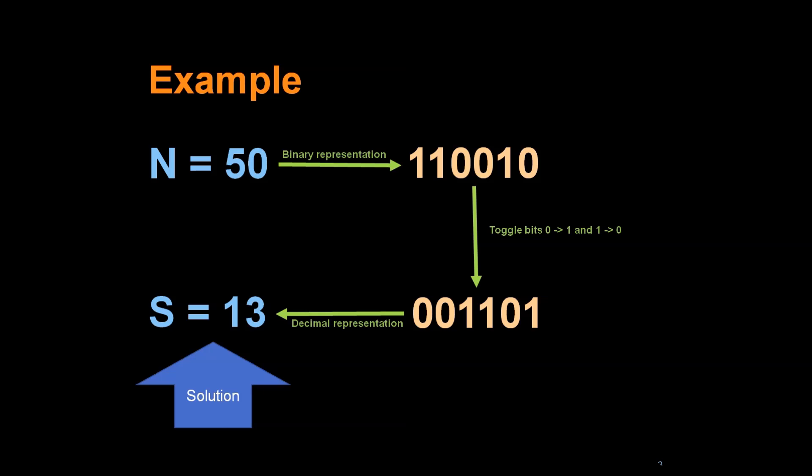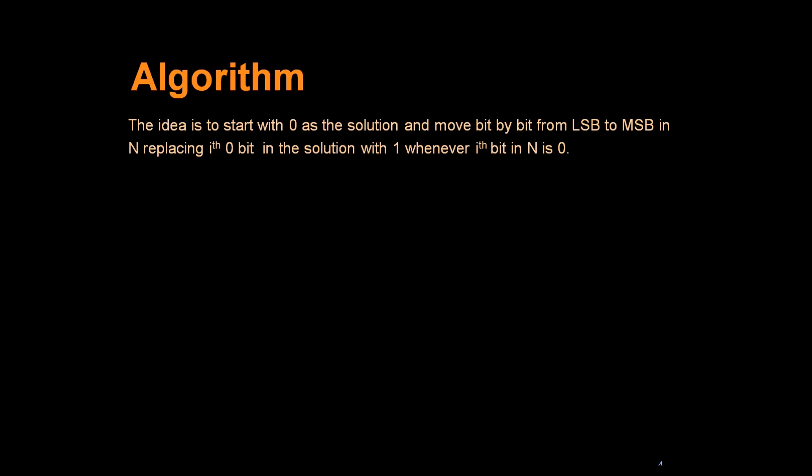This is what we want to do. This is a simple problem. Let's try to understand the algorithm. The idea is to start with 0 as the solution and move bit by bit from LSB to MSB in N, replacing ith 0 bit in the solution with 1 whenever ith bit in N is 0.